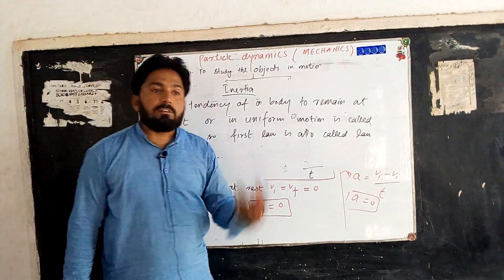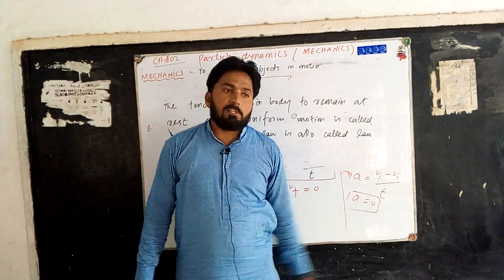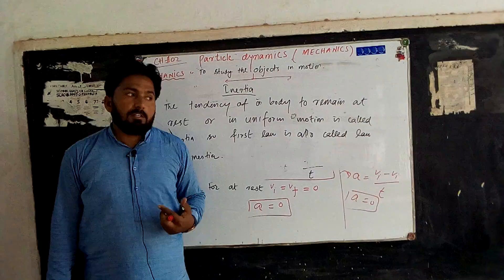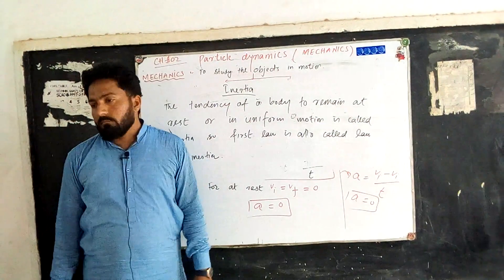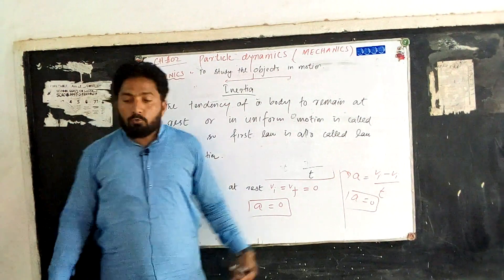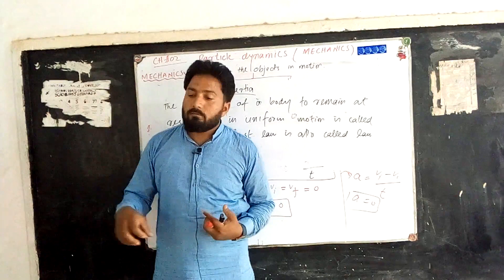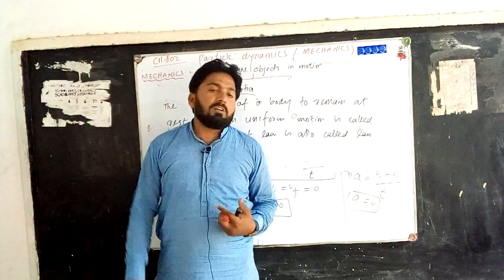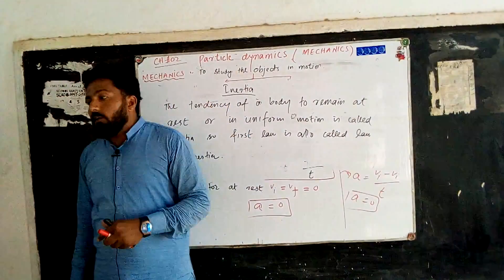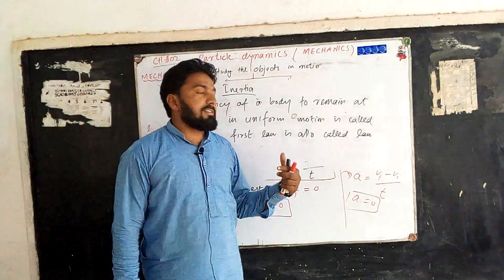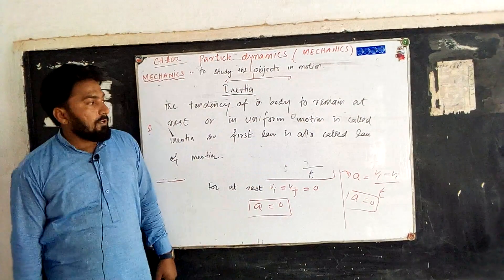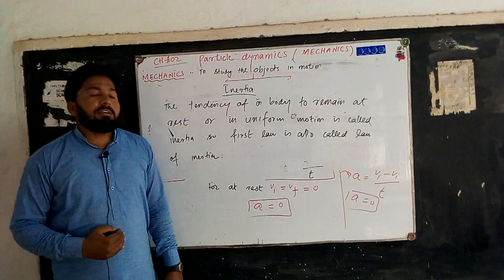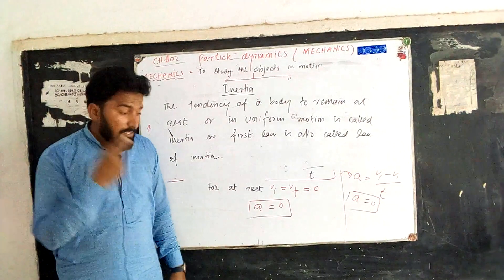First, let us see what a frame of reference is, and then we will come to inertial and non-inertial frames. Any coordinate system with respect to which you take measurements is called a frame of reference. For example, in this room we take one corner as the origin, then we have an X-axis, a Y-axis, and a Z-axis — this is our frame of reference. If this frame is at rest or moving with uniform velocity, it is called an inertial frame of reference. If the velocity is not uniform, it is called a non-inertial frame of reference.